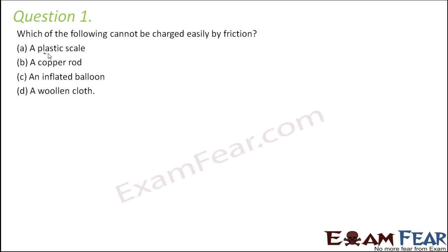Plastic is a poor conductor, and an insulator can be charged by rubbing. Copper is a good conductor, so good conductors cannot be charged — even if you rub them, they just provide a path and the charges flow through. So copper rod cannot be charged. Balloon and wool are poor conductors and therefore they can be charged.